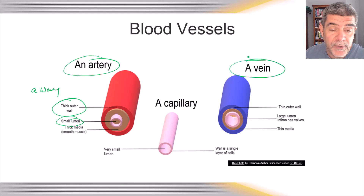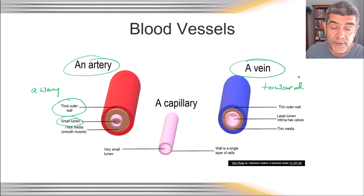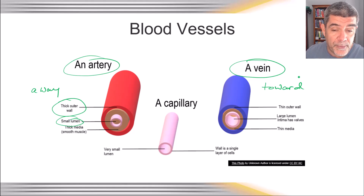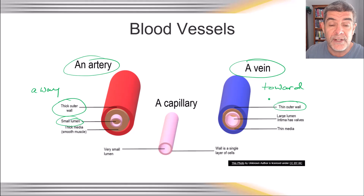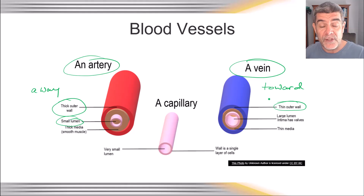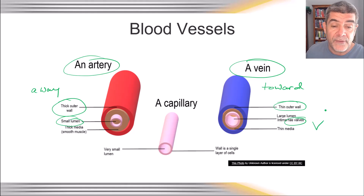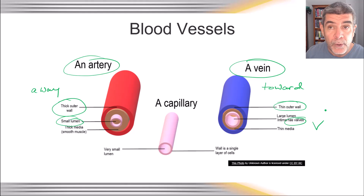Veins return blood towards the heart — either from the lungs or from the rest of the body through the vena cava. They aren't under as high a pressure, so the outer walls are thinner. However, blood returning from the toes, for example, has to work its way back up against gravity. That's why veins have valves — to limit backward flow. Sometimes you can see pooling at these valves, which are the famous varicose veins.